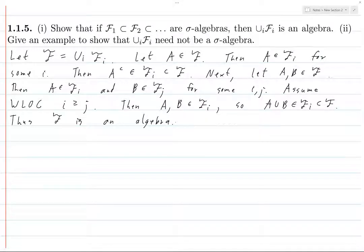F is an algebra because it's closed under complements and finite unions. Well, pairwise unions, which can always be extended to finite unions just by induction. All right, and then the next one is give an example to show that the union need not be a sigma algebra.